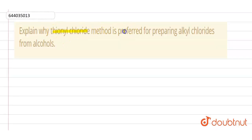thionyl chloride method is preferred for preparing alkyl chlorides from alcohol. The reason for this is, suppose we are taking this alcohol and we are adding thionyl chloride in it,